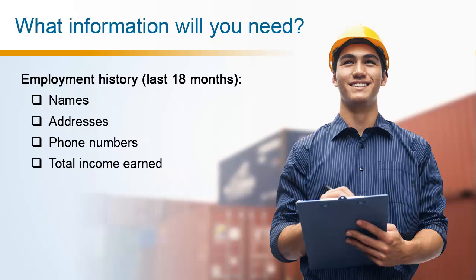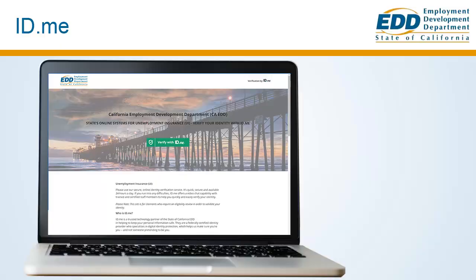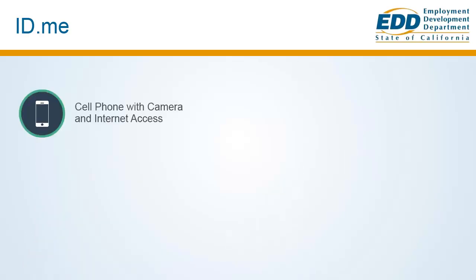You'll also need the total income earned from each employer and the reasons why each job ended. We use ID.me to protect your identity and prevent fraud. To file your claim online, you need an ID.me account. To create an account, you need a cell phone with a camera and internet access.